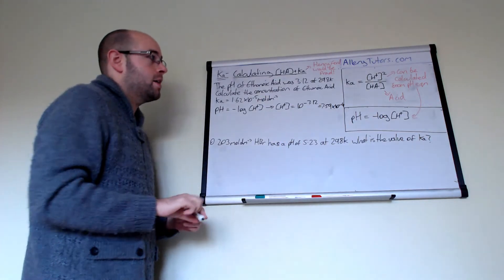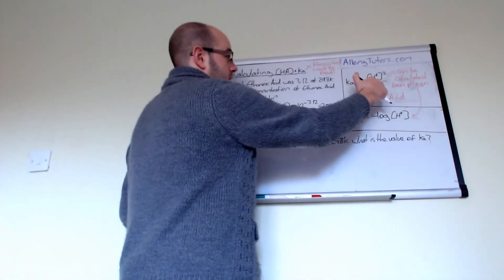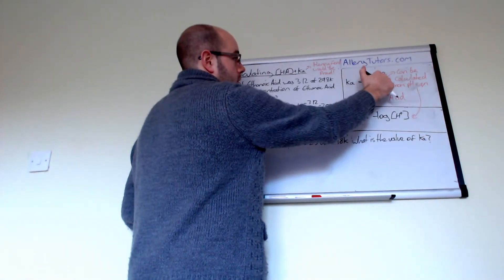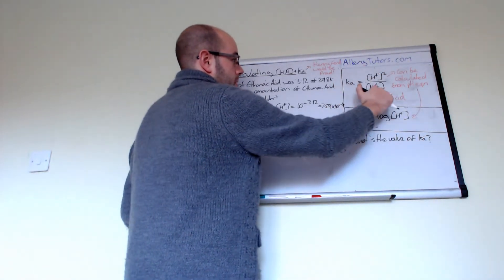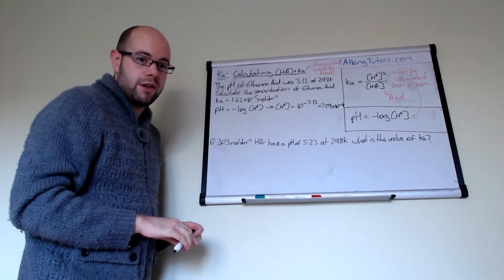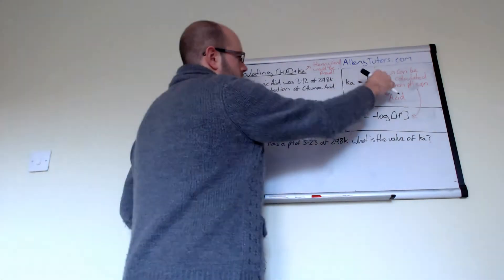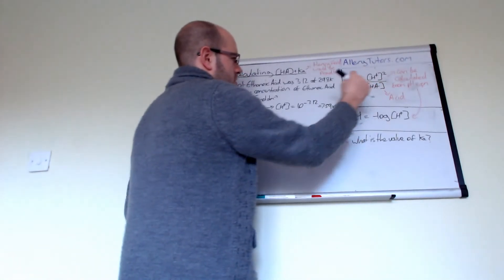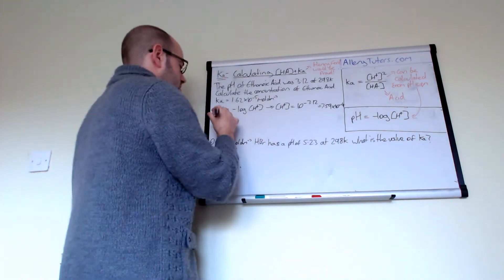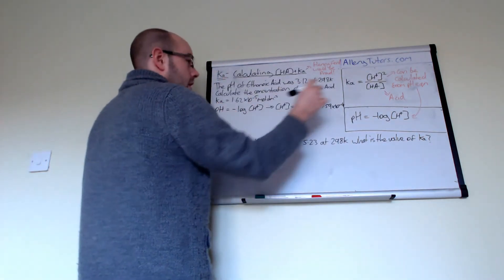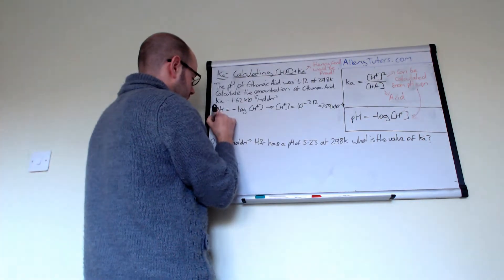Now we've got that, we can take our Ka expression — because we know Ka and we know H⁺ — and we can work out the concentration of HA. If we rearrange this expression, we can find the concentration of HA, which in this case is our concentration of ethanoic acid.